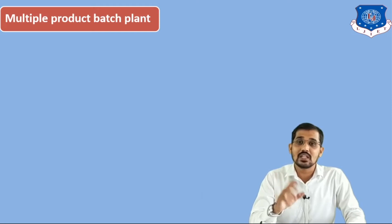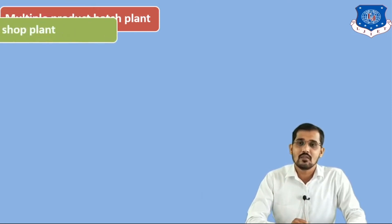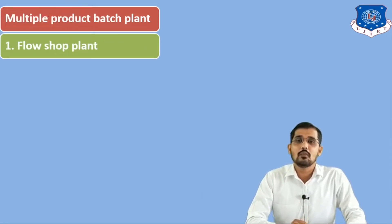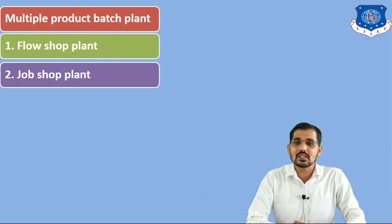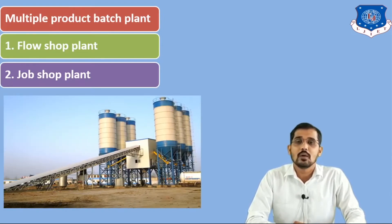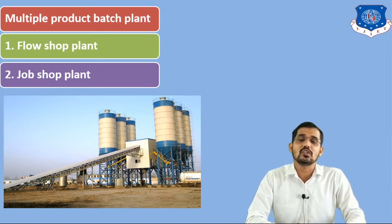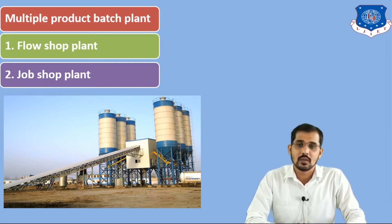This plant is divided into two sub-parts. The first one is the flow shop plant and the second one is the job shop plant. This is the figure for multiple product batch plant. Now I will discuss with you the flow shop plant and job shop plant.